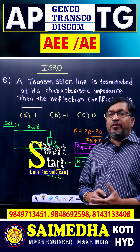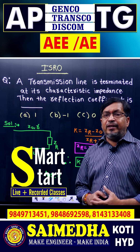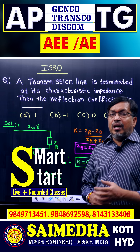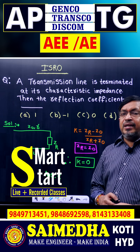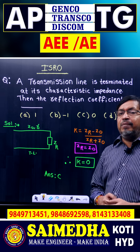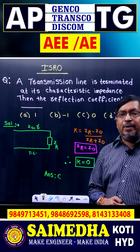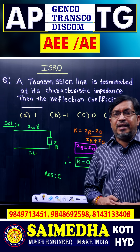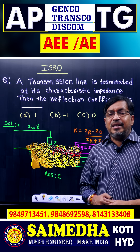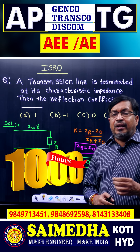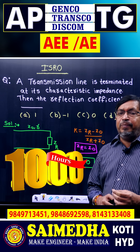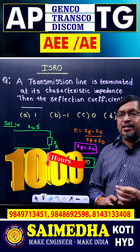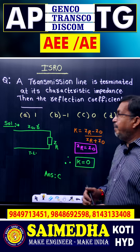The reflection coefficient formula in terms of impedances is: K equals ZR minus Z naught, divided by ZR plus Z naught, where ZR is the receiving end impedance and Z naught is the characteristic impedance.